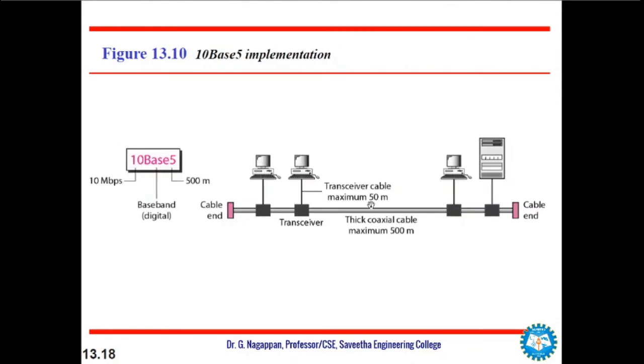Now when we see about the individual implementations, 10Base5 implementation goes with 10 Mbps, baseband digital, and 500 meter cable length. There's going to be a single cable ended with a cable end at both corners, and various devices—it may be a printer or a server—all these workstations are connected to this single thick coaxial cable of maximum length 500 meters. There can be a transceiver cable from this coaxial cable towards the computer, and it can be maximum 50 meters. We should not exceed that. So this is 10Base5 implementation.